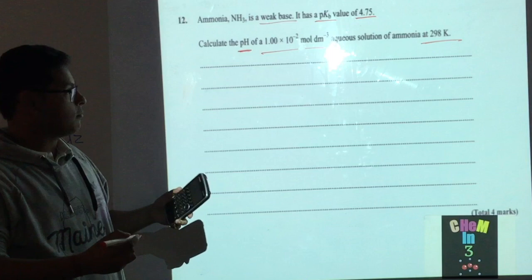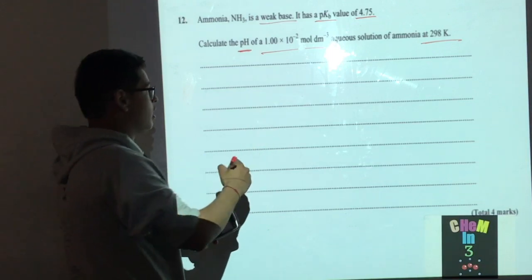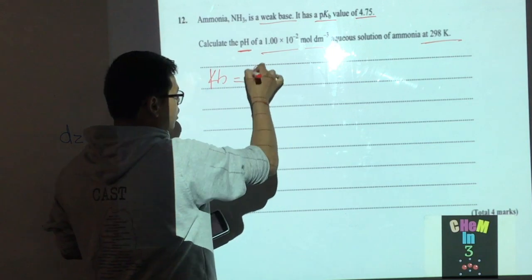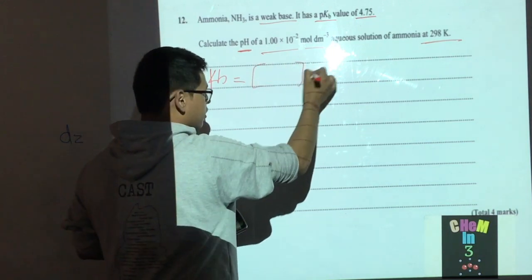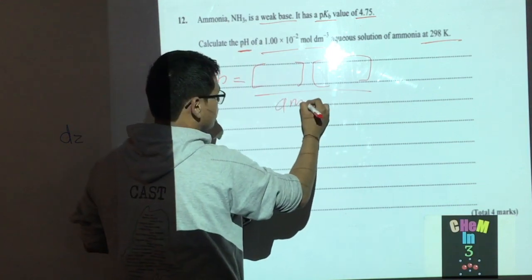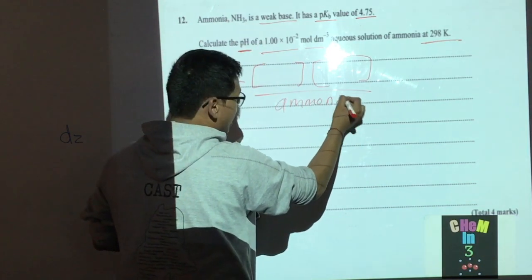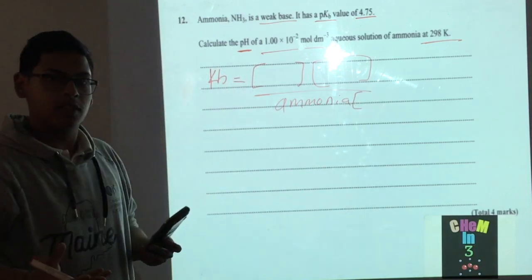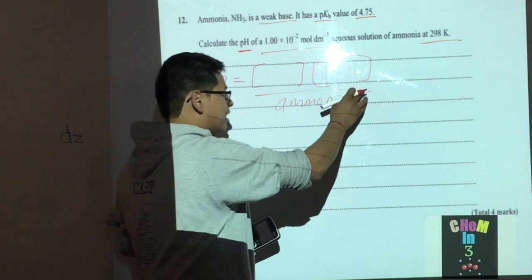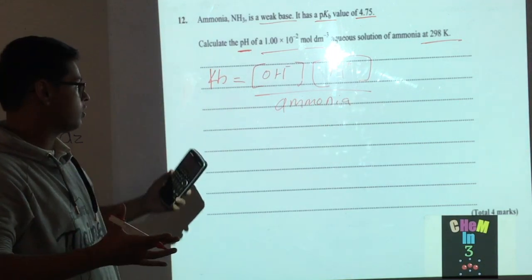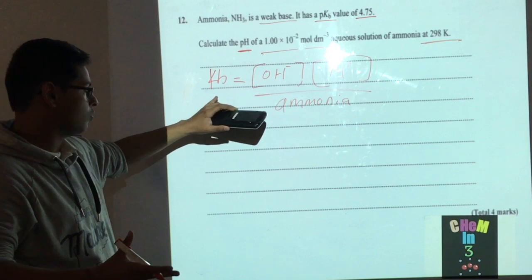To solve this, the equation we use is KB equals the products divided by the reactants. Here we have ammonia plus the water that's added, but we consider the water to be negligible for this equation. So we get the ammonia's concentration at the bottom, and when we're solving, these concentrations will be the same.